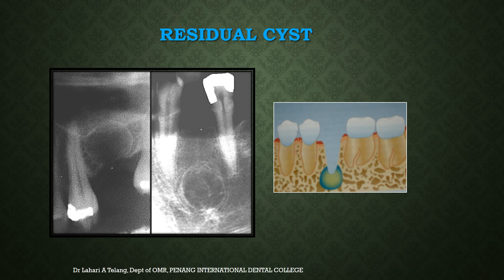A residual cyst is a term for a cyst left within the jaw after extraction where the cystic space has not been surgically debrided. This is why I stress that even when there is a root stump, it is important to take a radiograph before extraction to avoid missing a periapical pathology. Leaving such a cystic area behind can lead to secondary infection, pain, or complications if an implant is planned for that site, requiring debridement and bone grafting.